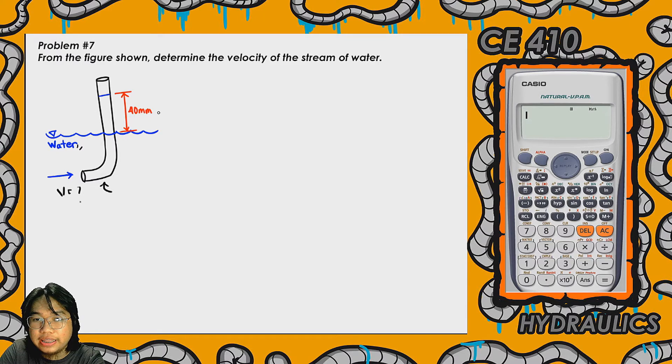Due to that velocity, we can create a head. The created head inside the tube is 40 millimeters. We will determine the velocity, and since the coefficient of velocity C_b is not given, we can only compute the theoretical velocity.